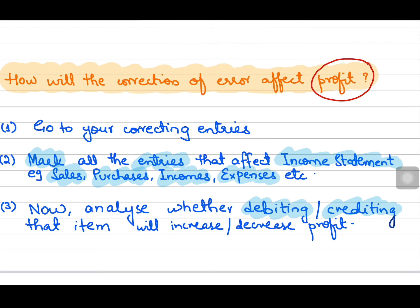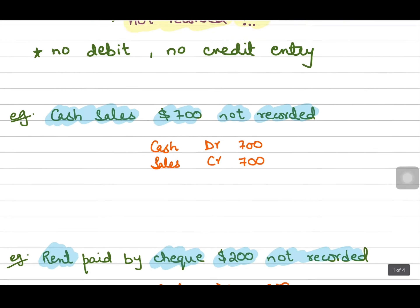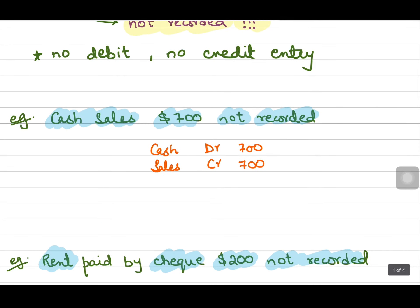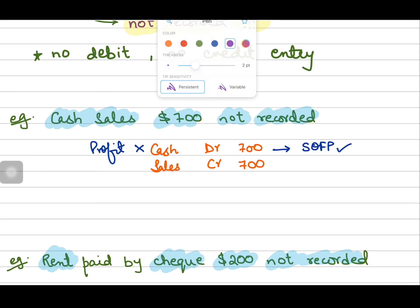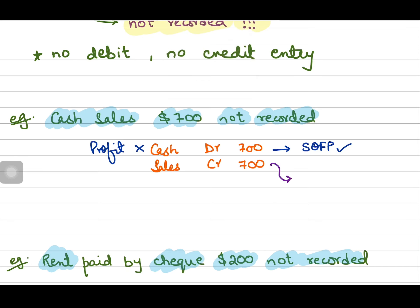Let's go back to our correcting entries and identify whether they will affect profit or not. In the first one, we did not record the cash sales. Cash doesn't become part of the income statement — it goes in the statement of financial position — so it will not affect profit. However, we have credited sales, and sales go in the income statement. When sales are credited, the sales account is increased, and whenever sales increase, profit will also increase.